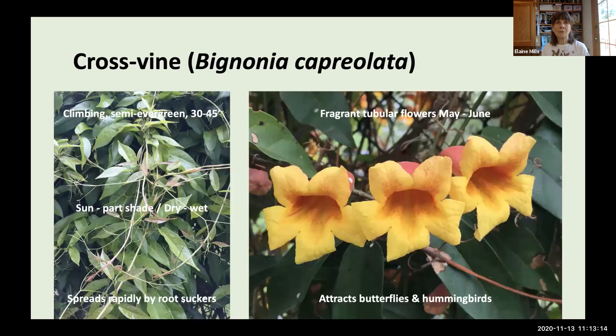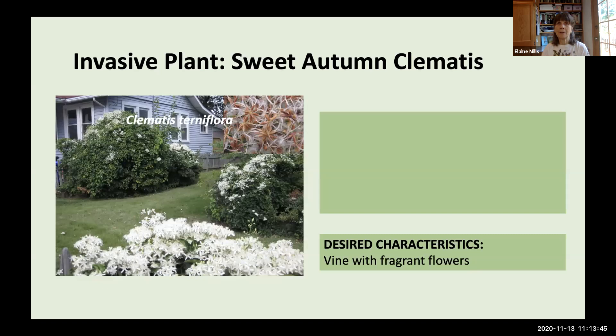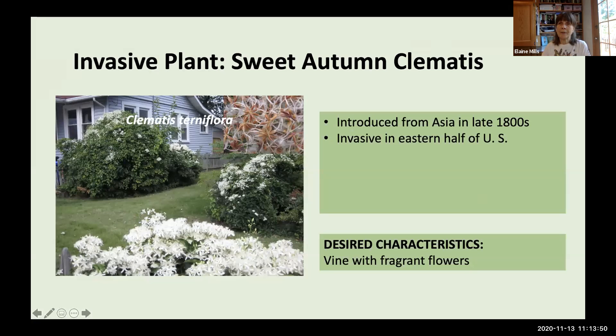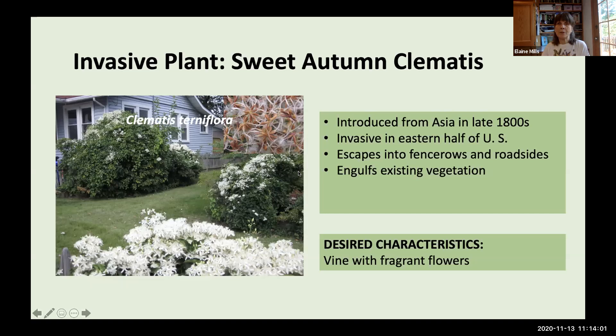Cross Vine is another good substitute — a climbing semi-evergreen vine that spreads fairly rapidly by root suckers. It's fairly vigorous and aggressive, so site it carefully and monitor its growth. It has attractive, fragrant, tubular flowers from May to June attracting butterflies and hummingbirds. Sweet Autumn Clematis was introduced from Asia in the late 1800s and is invasive throughout a good part of the United States. It escapes into fence rows and roadsides — I have some right on my block, engulfing azaleas and rhododendrons. It produces vast quantities of wind-dispersed seeds and re-sprouts from roots when cut back.